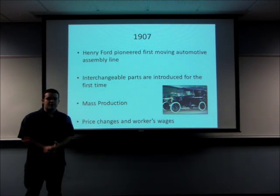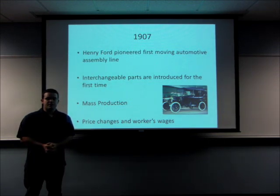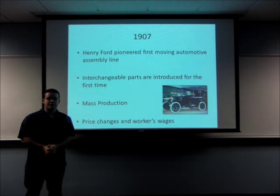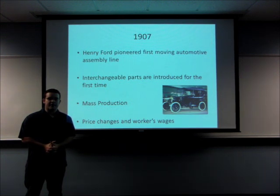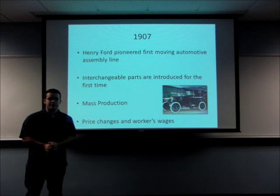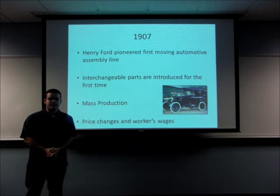In conjunction with this mass production and the efficiency of the new assembly process, workers' wages were increased from $2.50 a day to $5 a day, meaning an average assembly line worker could purchase a Ford vehicle with four months of pay. The price of the vehicle also decreased as the efficiency of the new process increased. Starting in 1908, the price was $850, decreasing to a low of $260 later on in the process.